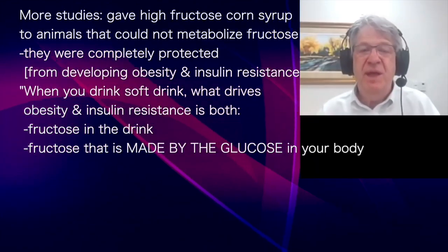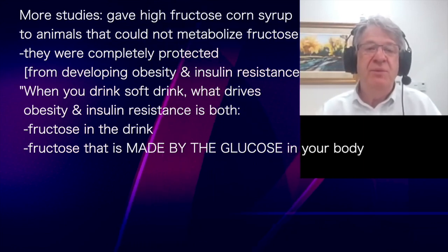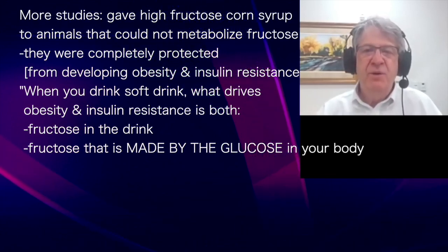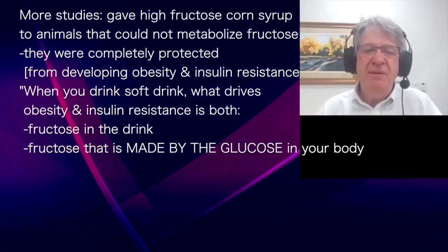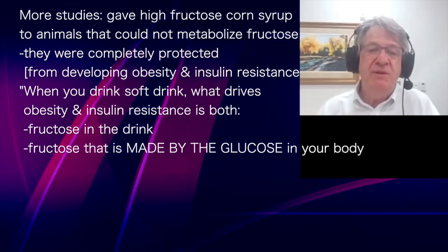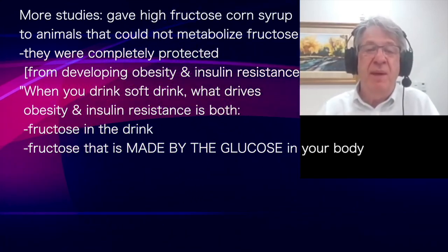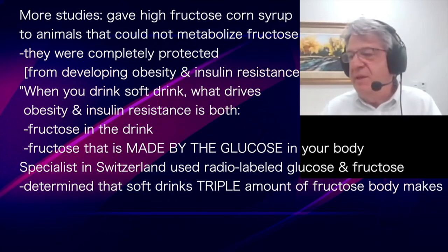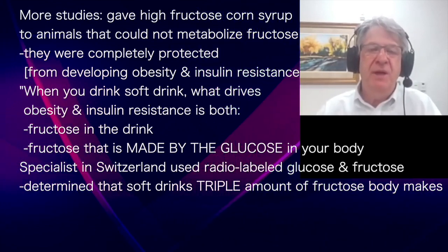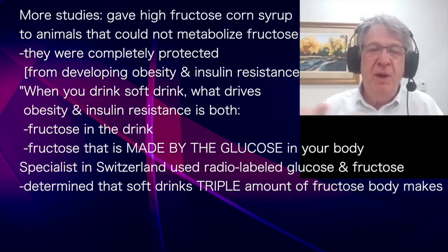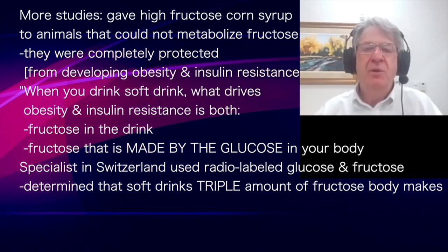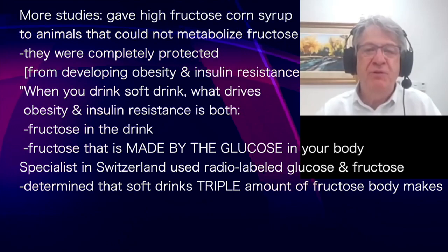We gave high fructose corn syrup to animals that could not metabolize fructose, and they were completely protected. So when you drink a soft drink, what's driving the obesity response and insulin resistance seems to be the fructose in the drink plus the fructose you're going to make in your body. A researcher in Switzerland used radio-labeled fructose and glucose to figure out what was happening in people, and found that when you give a soft drink to a person, you triple the amount of fructose you make.